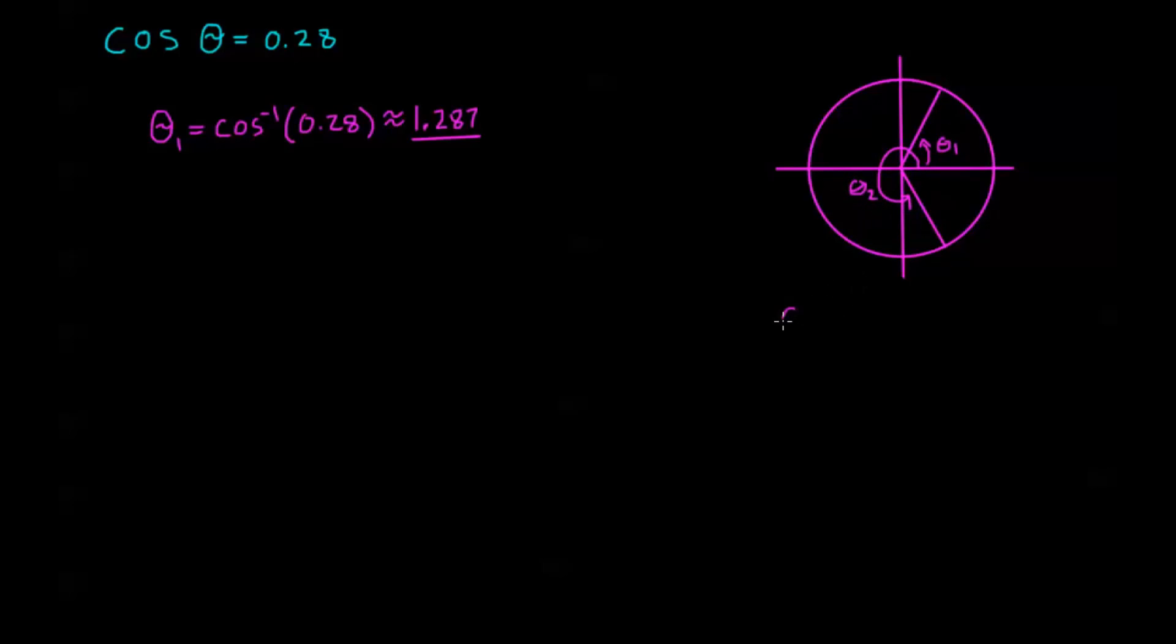Now notice here from our picture, θ₂, this is the same thing as if I did one full rotation of 2π and then subtracted θ₁ from 2π. In other words, if I went this way, this would be negative θ₁, wouldn't it? Because they both have the same reference number. So θ₂, if we're looking between 0 and 2π, this is going to be 2π minus θ₁. So in other words, over here, let's figure out what this is. My θ₂ is 2π minus θ₁, which is 1.287. And this is about equal to 4.996.